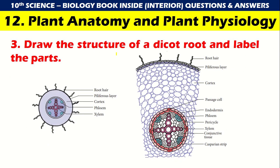Structure of dicot root — draw and label their parts. This is very important. In the structure: root hair, piliferous layer, cortex, phloem and xylem. Here it is root hair, then the piliferous layer, then cortex, then passage cell and phloem, pericycle, xylem, conjunctive tissue and casparian strip.